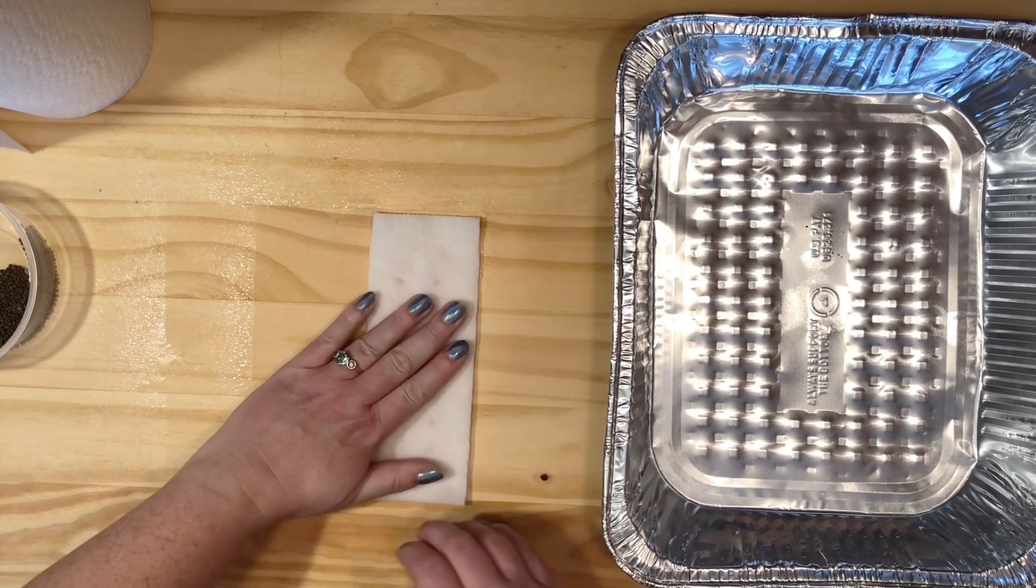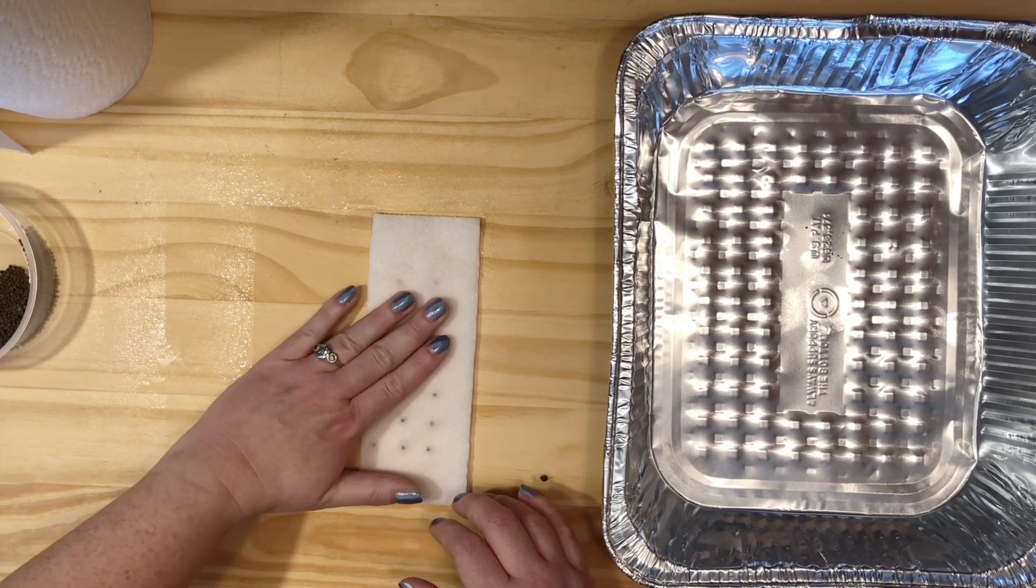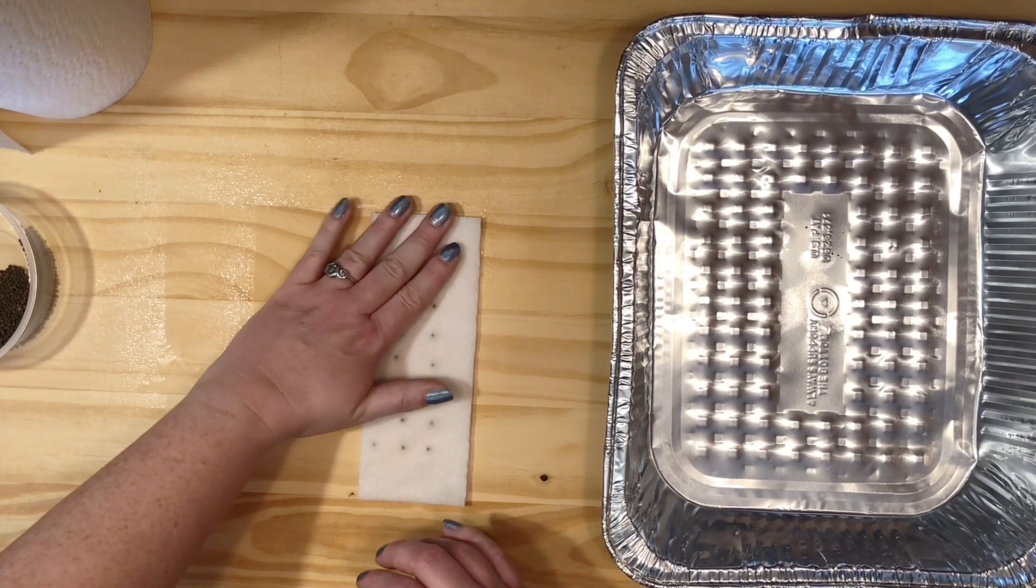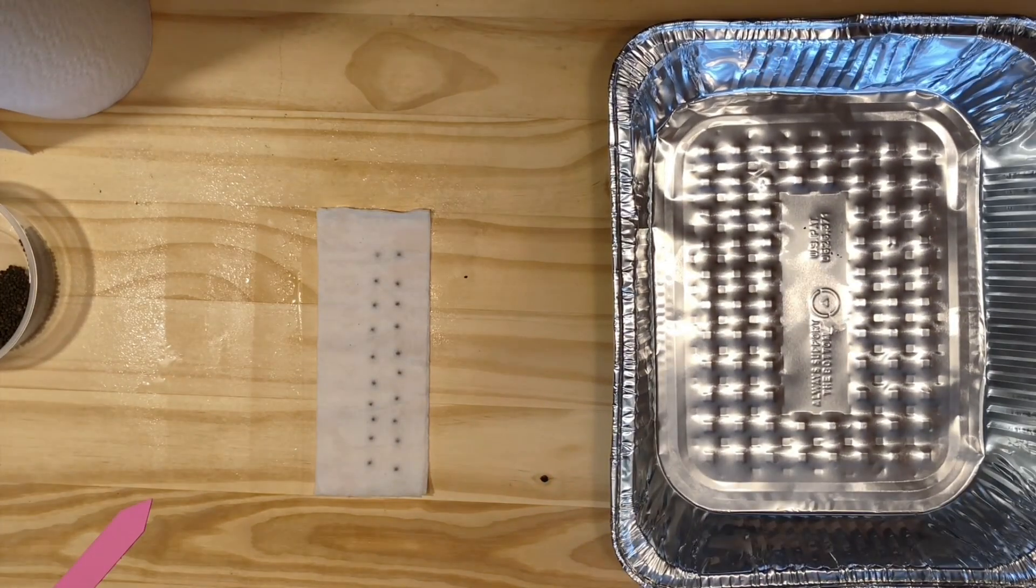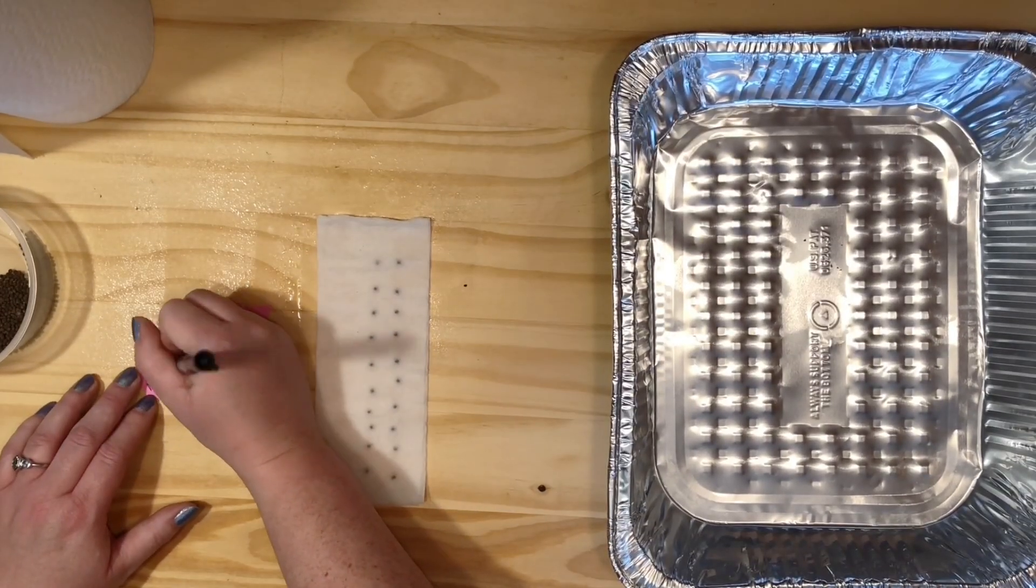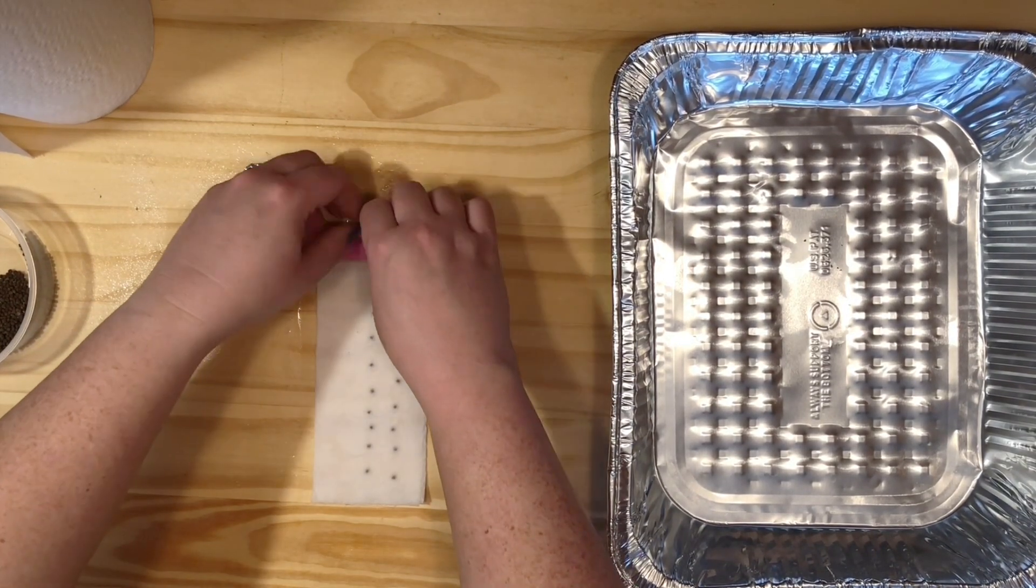Once you have all of your seeds on your slightly wet paper towel, fold it in half, and you want to lightly press down. You want to make sure the seeds are making good contact with the paper towel, but be careful not to squish them. I'm labeling my seeds here with plant markers, and then rolling the paper towel around it.